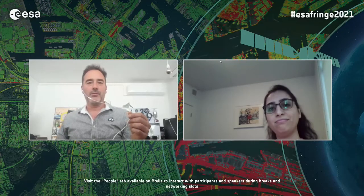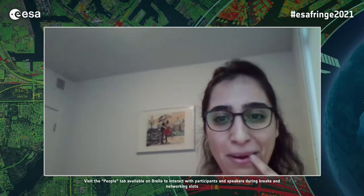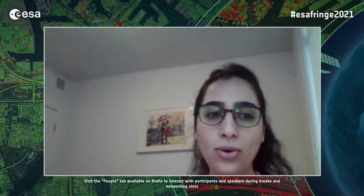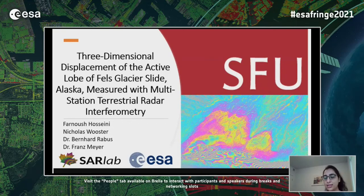The next talk is given by Farnoosh Oseivini from Simon Fraser University in Burnaby, Canada. She will talk about three-dimensional displacement of the active lobe of Fels Glacier Slide, Alaska, measured with multistation terrestrial radar interferometry. This work was done by the SFU SAR Lab in collaboration with the University of Alaska, financially supported by the Alaska Pipeline Service Company. Fels Glacier Slide is located on the northern slope of the west-facing Fels Glacier Valley in Alaska — an active deep-seated gravitational slope deformation in proximity to Richardson Highway and the Trans-Alaska pipeline, neighboured by the Denali Fault.